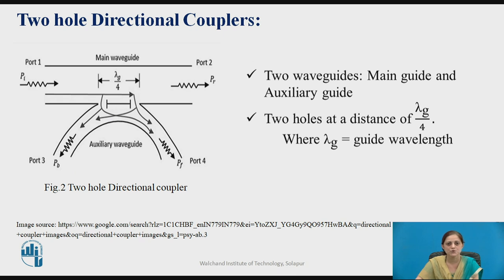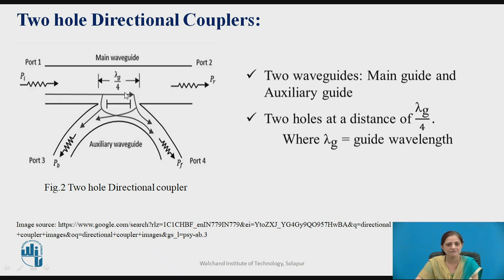Now, what is a two-hole directional coupler? It is one type of directional coupler. Two holes are provided with a separation distance of λG/4. It also has two waveguides: the main waveguide and the secondary waveguide, also known as the auxiliary waveguide. The two holes are provided in the main waveguide, placed at a distance of λG/4, where λG is the guide wavelength.